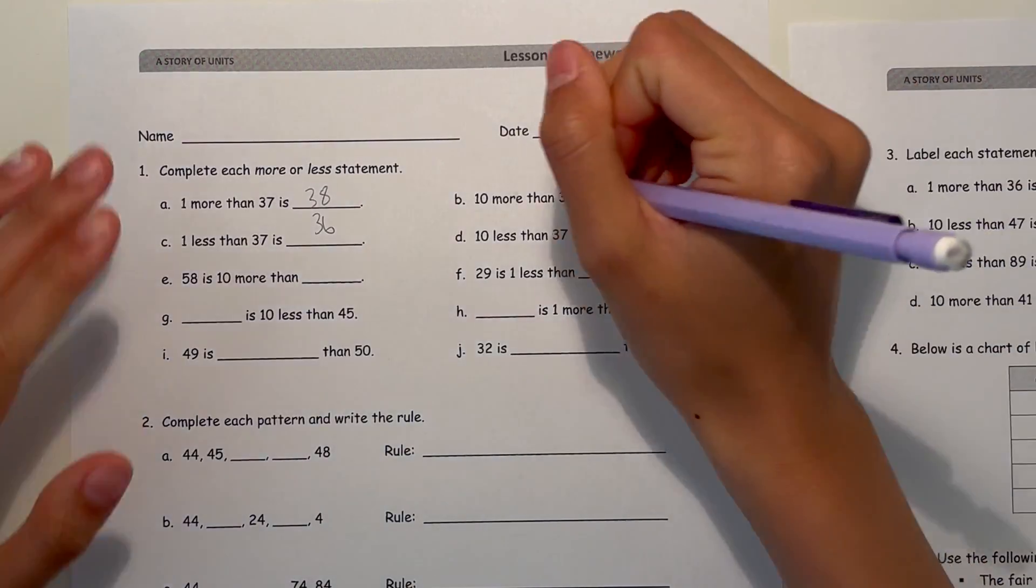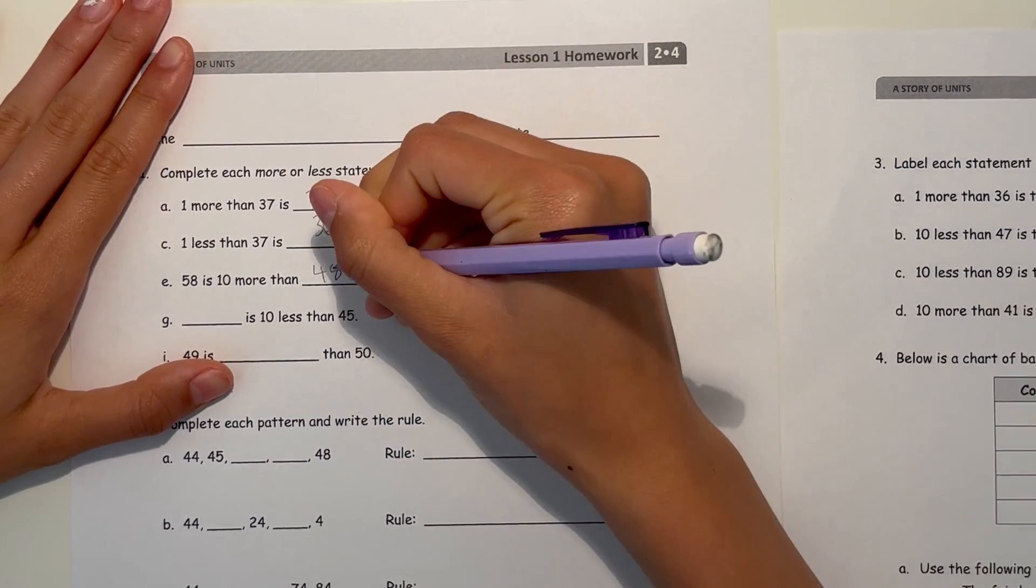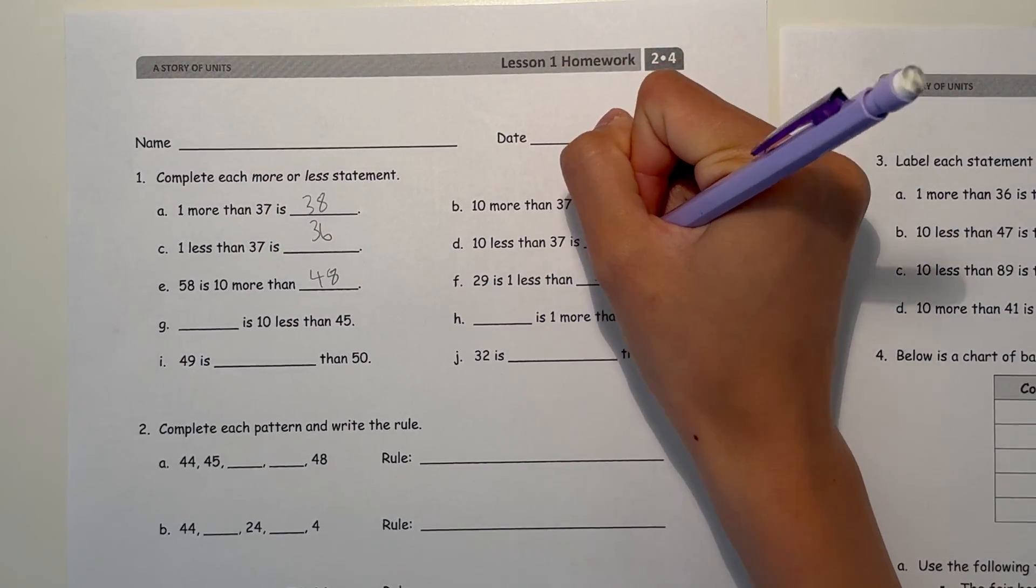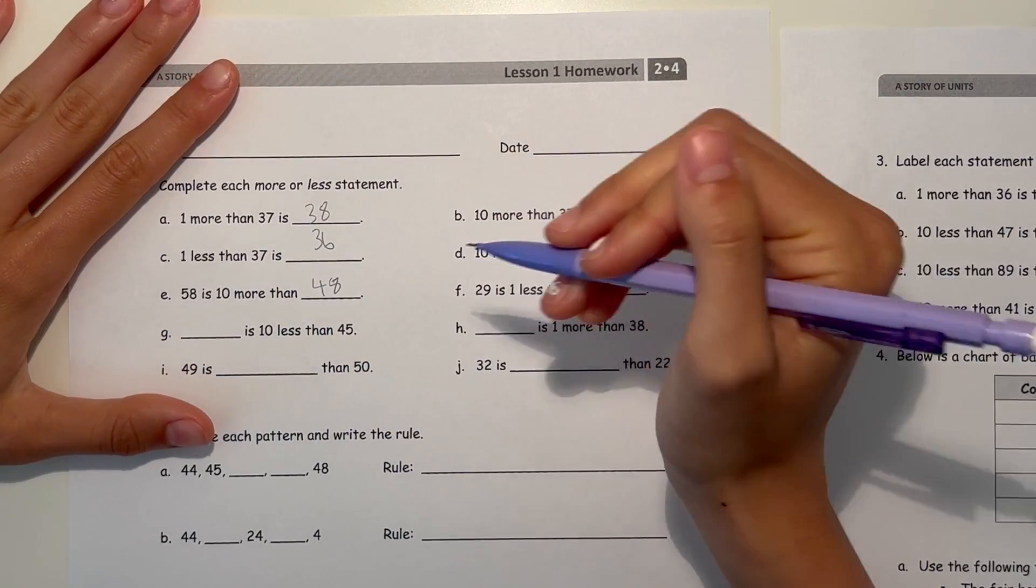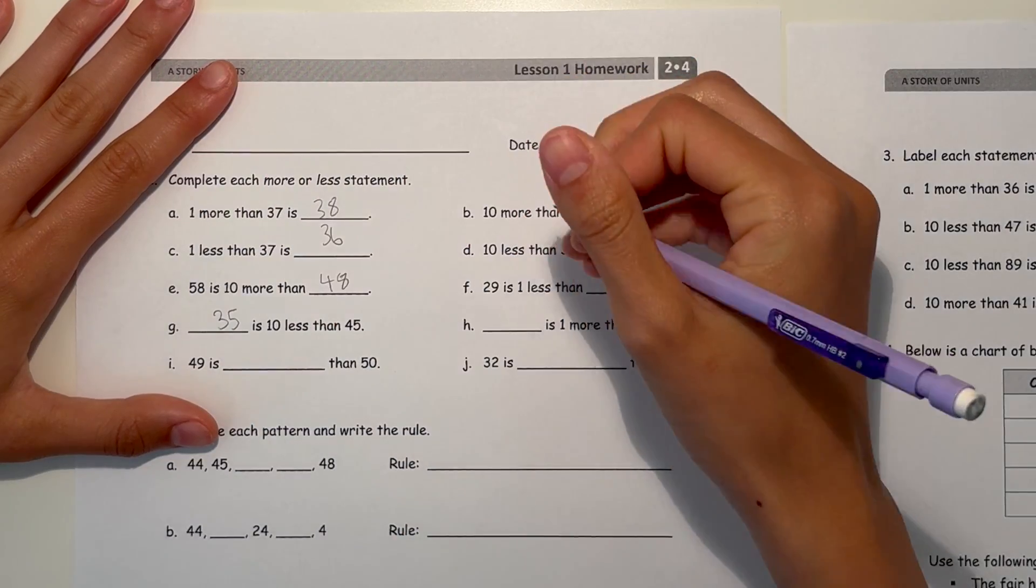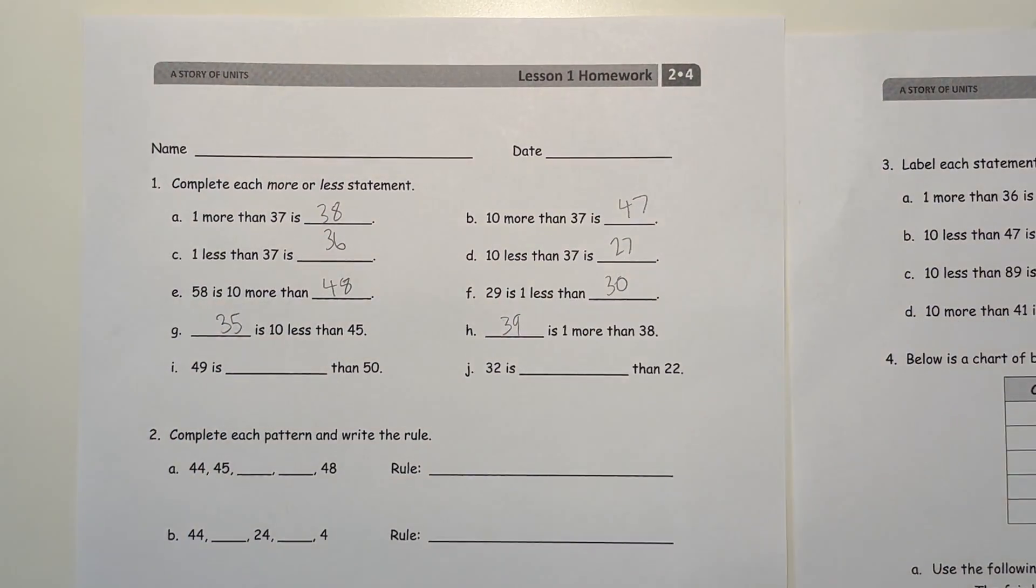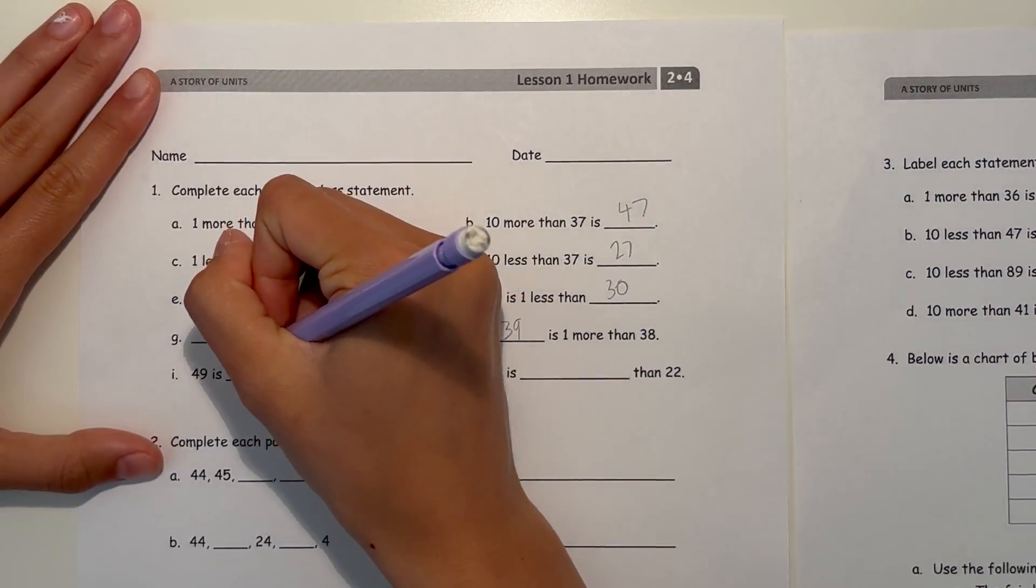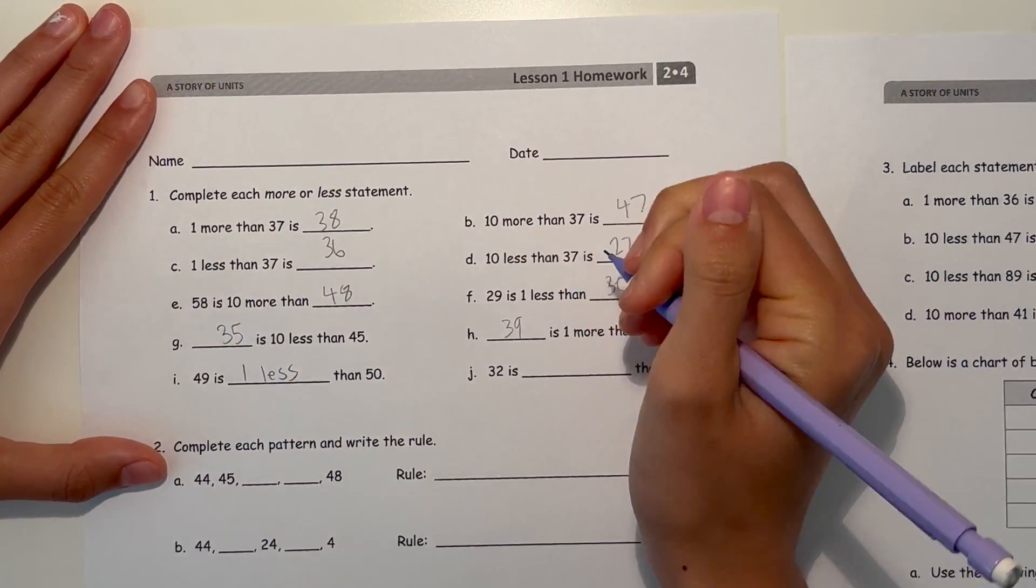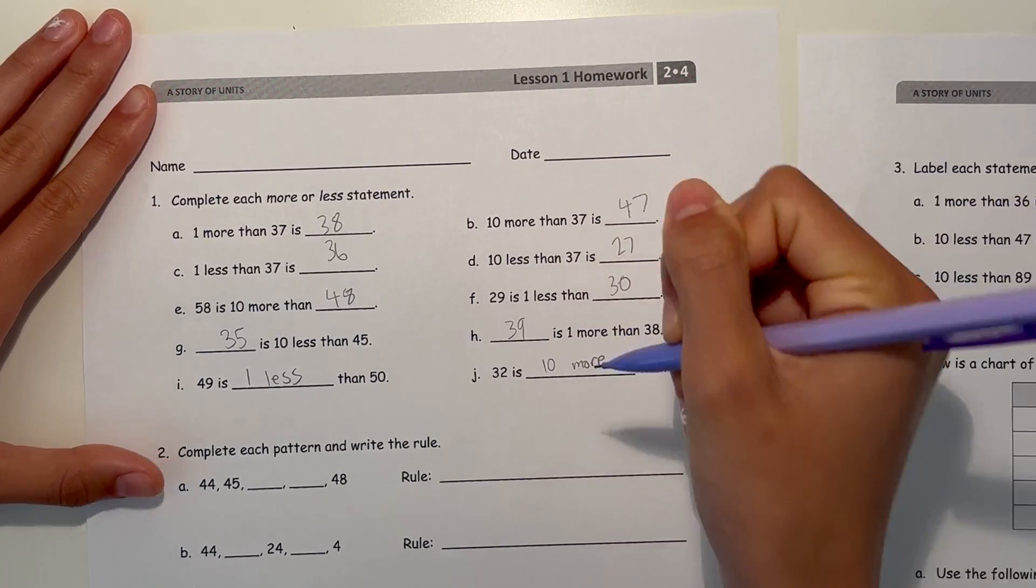Now 58 is 10 more than, so what number is 10 less than 48? 48. And 29 is 1 less than 30. Now blank is 10 less than 45. Well, 35 is 10 less than 45. And blank is 1 more than 38. That's 39. So 49 is blank than 50. So 49 is 1 less than 50. And 32 is 10 more than 22.